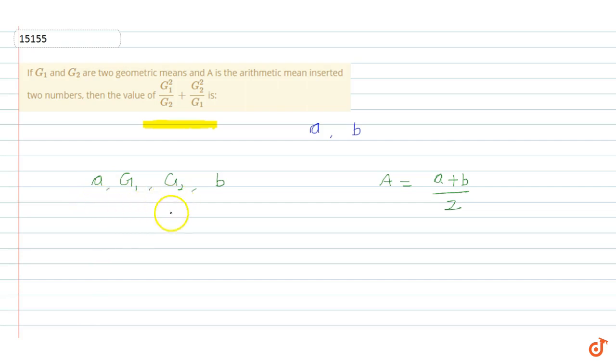These four terms will be in GP. So if we take the common ratio, the common ratio will be equal to g2 by g1.